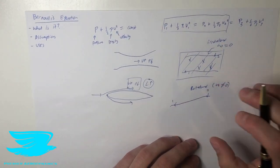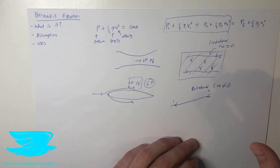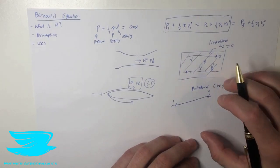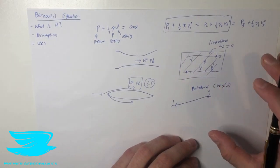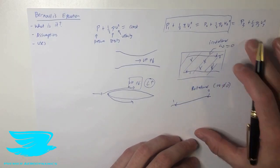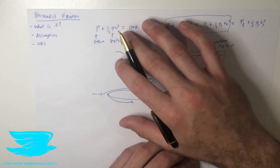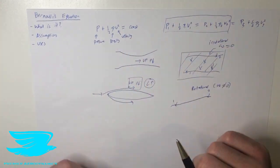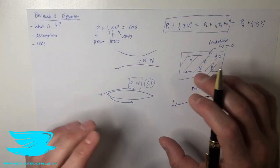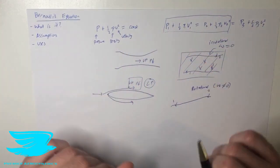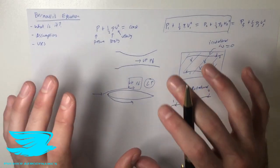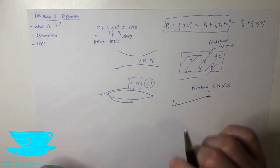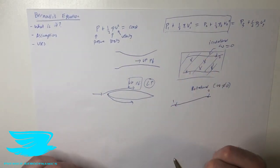As a side note, pretty much every real flow is rotational. So in real life this kind of breaks down, but that's where we have some inefficiencies. However, they are usually quite minor, so we can still get away with using it to quite a great extent.